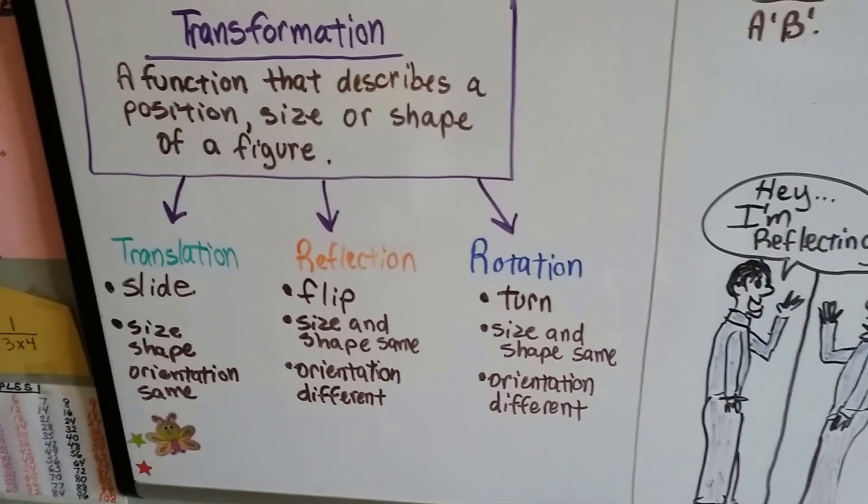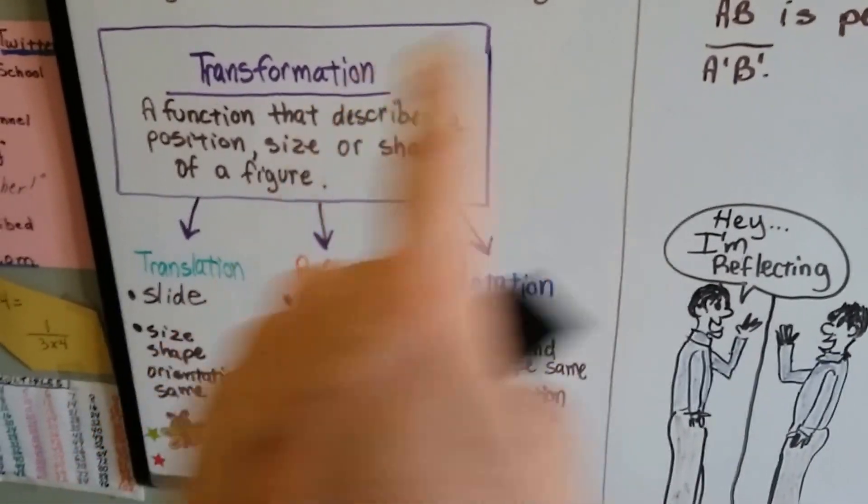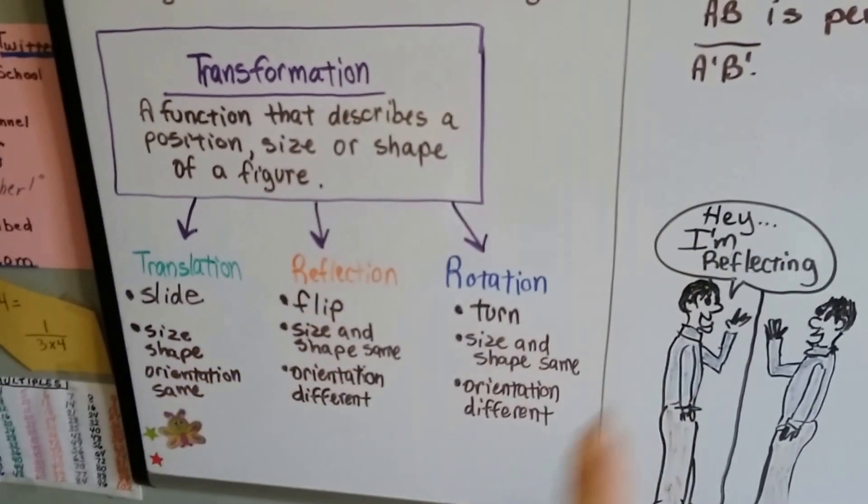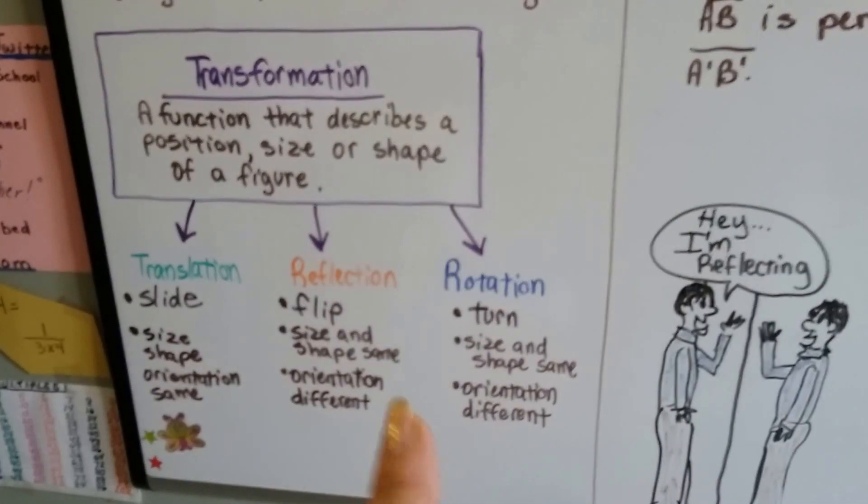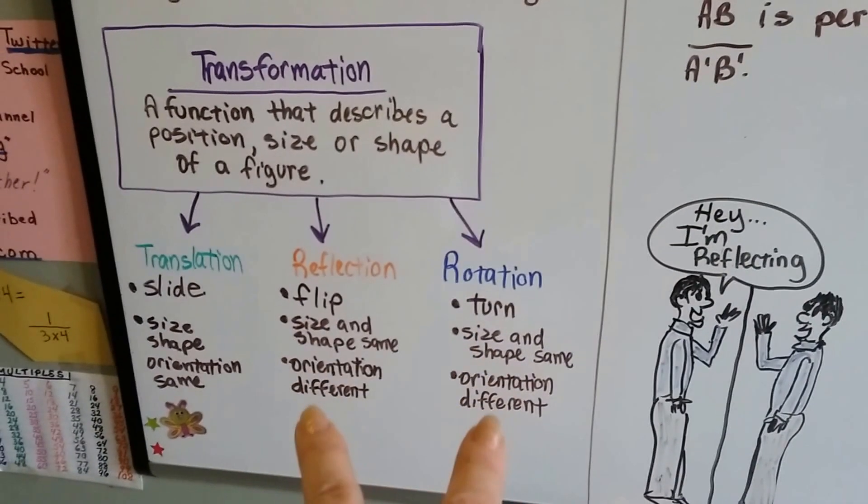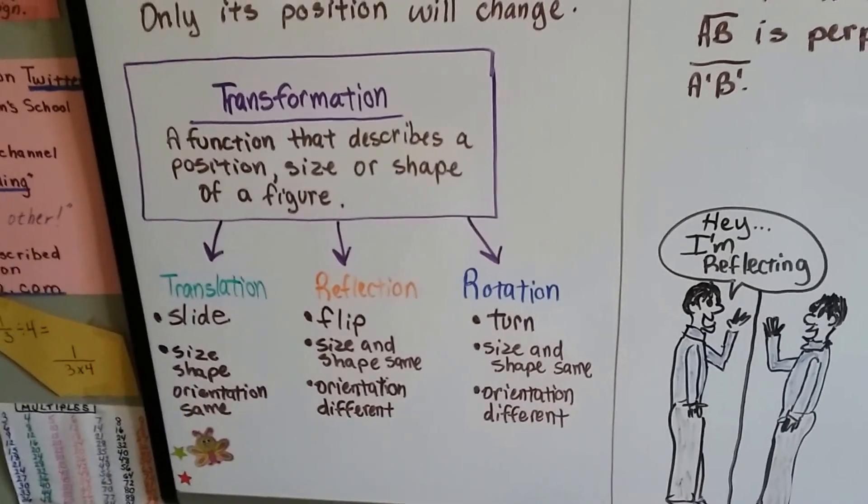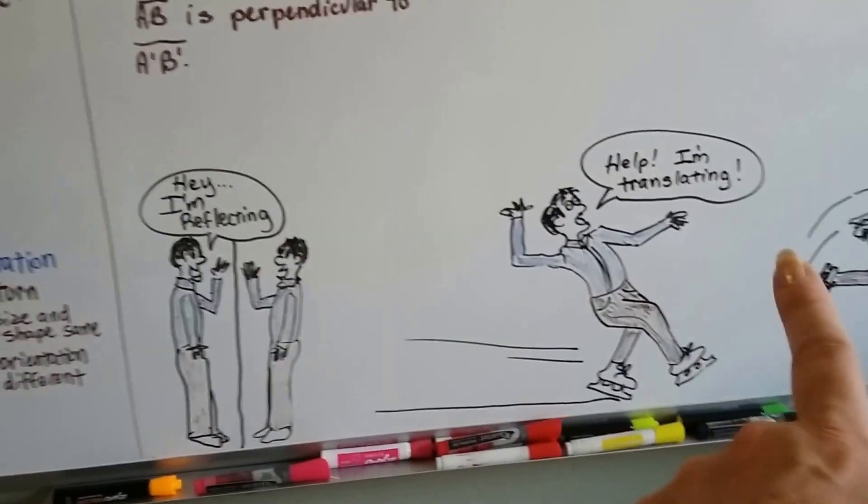Rotation, that's what we've been talking about lately. It turns around a center of rotation, around a central point. The size and shape will stay the same, and the orientation is different. So, these are the only two that have different orientation. The translation keeps its orientation. It's just sliding.